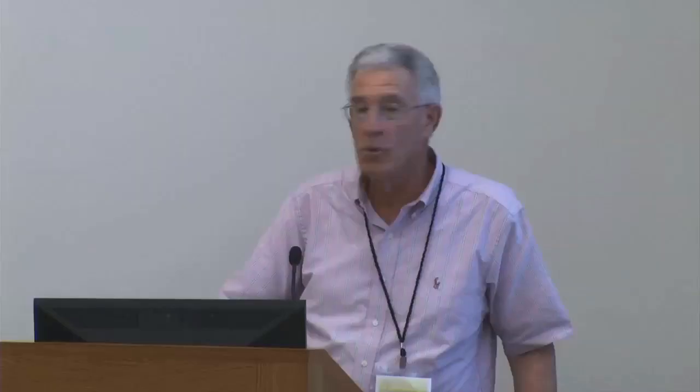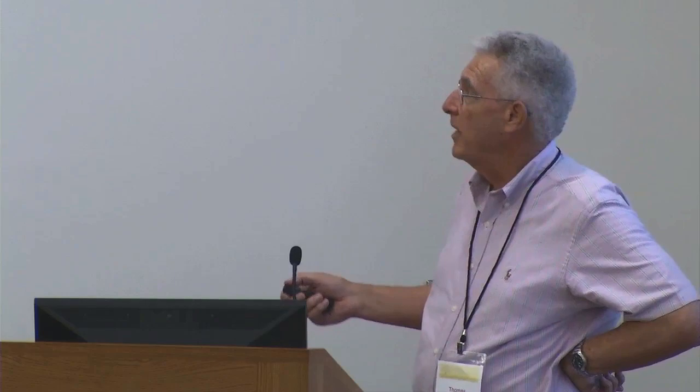Can we get therapeutic synergy by combining a glycolysis inhibitor with a restricted ketogenic diet? We're comparing a standard high-carbohydrate mouse chow diet — analogous to the standard American diet — with a ketogenic diet. Any kind of ketogenic diet will work; we've looked at various formulations including lard-based. This is a low-carbohydrate, high-fat, moderate-protein diet producing a fat-to-protein-carb ratio of four to one, as opposed to less than one for the high-carb diet.